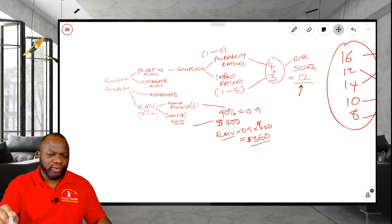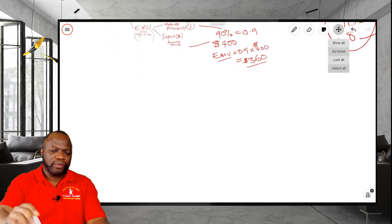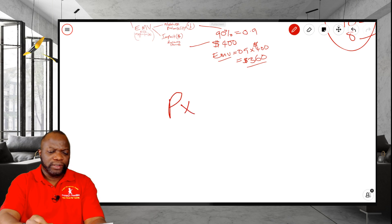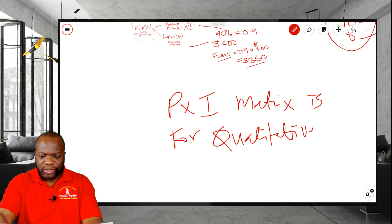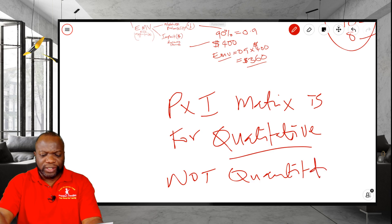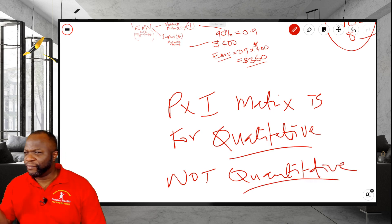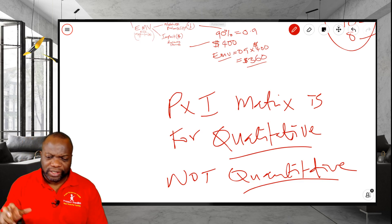Contrary to what a lot of people think, let me just spell it out. The P times I matrix is for qualitative, qualitative risk analysis, not quantitative. I know there's a misconception, but until you begin to read the details, you will not get the facts. Read the details and it will become very clear.